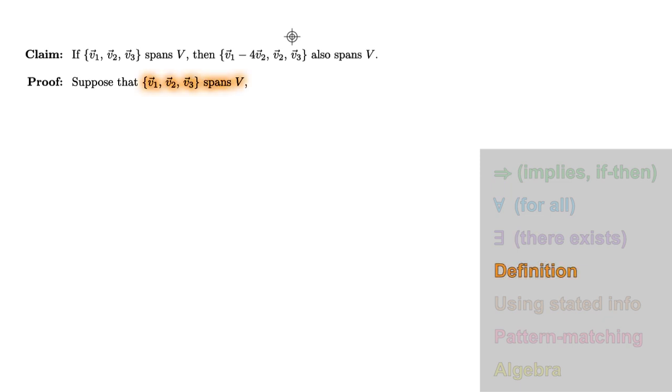We'll use the definition of span to restate our hypothesis, being careful to match the situation we're applying it to. The collection v1 v2 v3 spans v means that every vector in v can be built as a linear combination of the collection v1 v2 v3. In symbols, for all v in V, there exist scalars alpha1, alpha2, alpha3, one for each vector in our collection, so that our vector v is that linear combination of our collection: alpha1 v1 plus alpha2 v2 plus alpha3 v3.